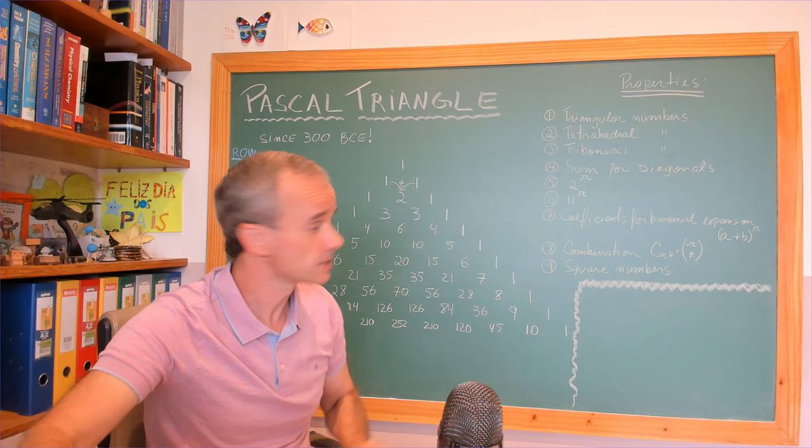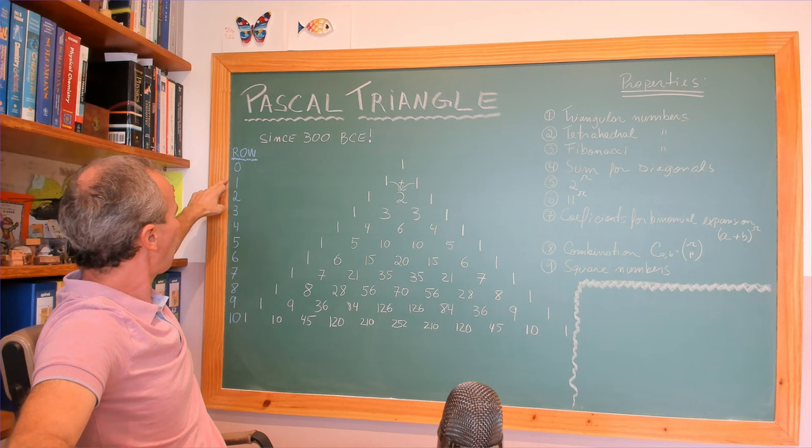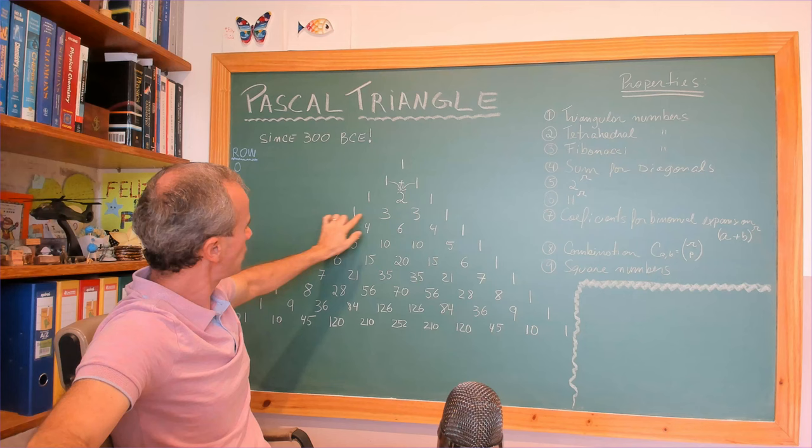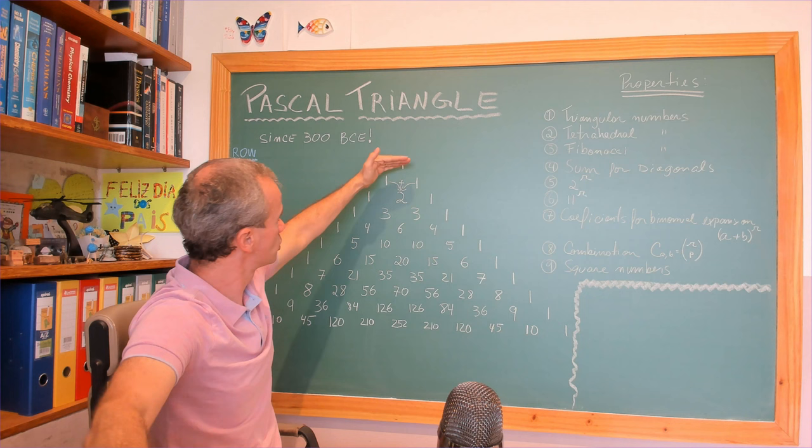The first thing I want to note: when we work with Pascal's Triangle, the row starts on zero. So row zero, row one, row two, row three, row four, row five. And when you go to each element, we start by counting zero, one, two, three — the positions. The positions on the row: zero, one, two, three, four, and so on.